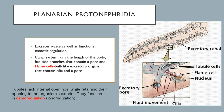The protonephridia handle osmoregulation and ionic regulation — separate from the digestive system. It's a set of canal systems that run throughout the body. At the end of each canal is a flame cell, named because it looks like a flame. Cilia within the flame cell drive fluid movement, and water and ions move across them. Excess waste exits through an excretory pore, and these canals never connect to the digestive system.